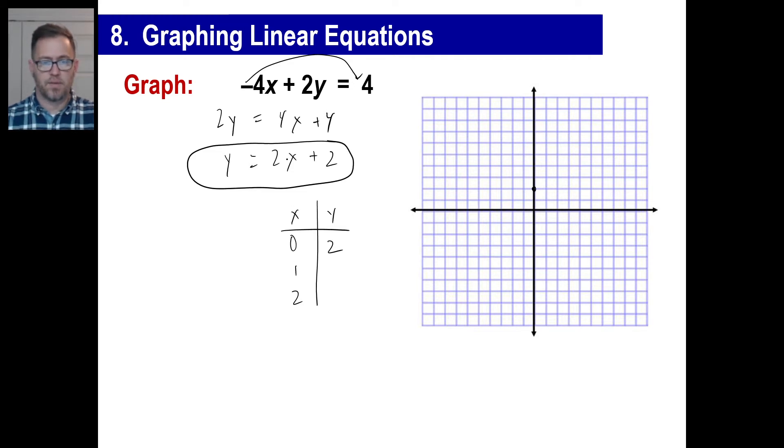If x is 1, 2 times 1 is 2, plus 2 is 4. So 1 over, 1, 2, 3, 4 is your next point. x is 2, that's going to give you 2 times 2 is 4, plus 2 is 6. So 1, 2, and then 1, 2, 3, 4, 5, 6, and there's our nice line. There you go.